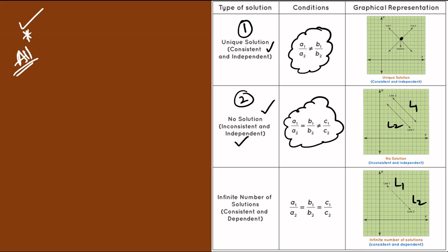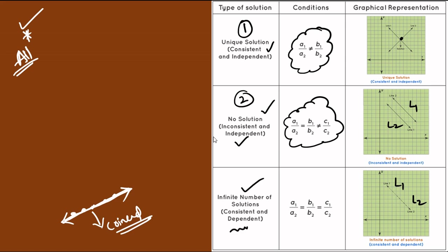The third case is coincident lines — two lines L1 and L2 that lie on top of each other. Every point on the two lines meets, so that is called infinitely many solutions. That system is called consistent and dependent.